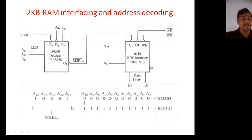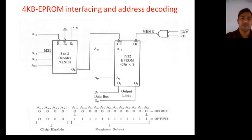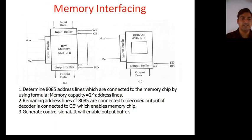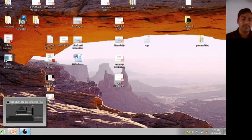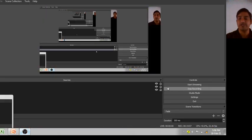That's all about how to interface your RAM or EEPROM with a microprocessor and how to determine the addressing range. For this, you need to remember the three steps. That's all for today's lecture. Thank you so much for watching, and have a good time. Thank you.